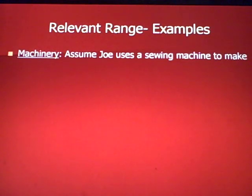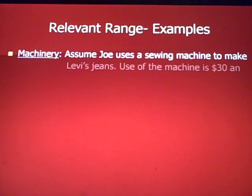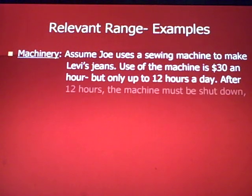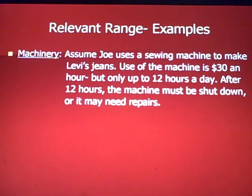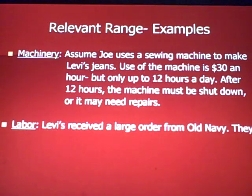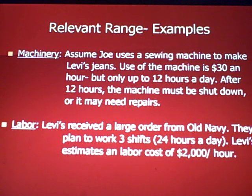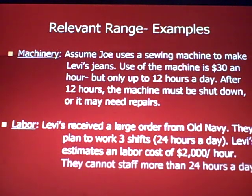Let's do some examples. Assume Joe uses a sewing machine to make Levi's jeans. The machine costs $30 an hour but can only run up to 12 hours a day — after 12 hours it must be shut down or may need repairs. Regarding labor: Levi's receives a large order from Old Navy and plans to work three shifts for 24 hours a day, estimating a labor cost of $2,000 an hour for all employees — but they can't run shifts more than 24 hours a day.